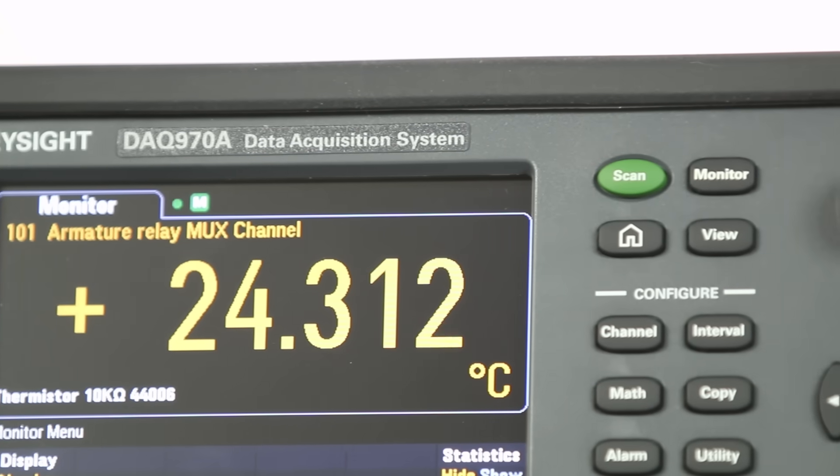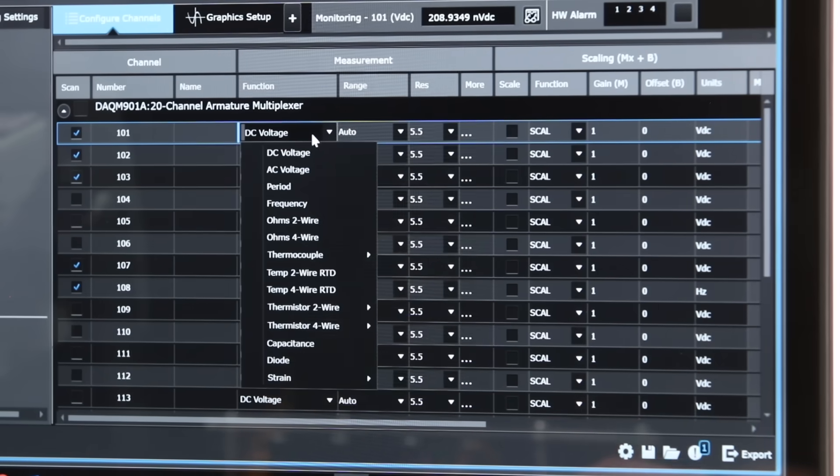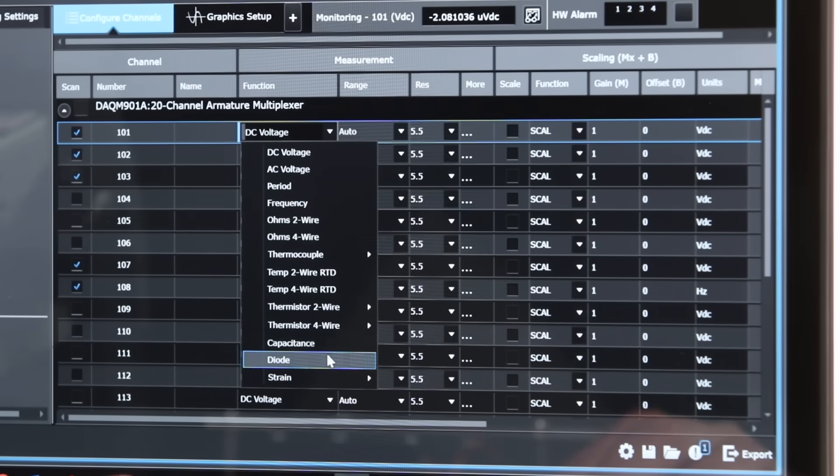A DAC system is a general measurement system and they can measure temperature and some electrical parameters like voltage, current, resistance, capacitance and more. They may or may not have a built-in source and a built-in DMM to make these measurements easier. If a DAC does have a source it's generally a low power source for basic measurement requirements.